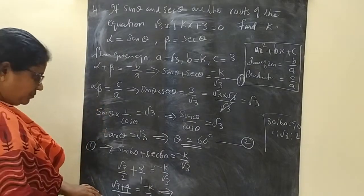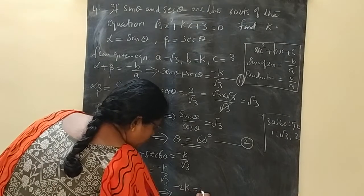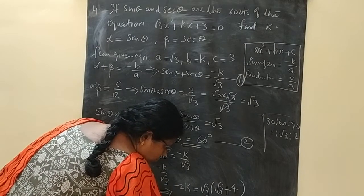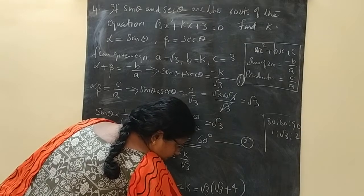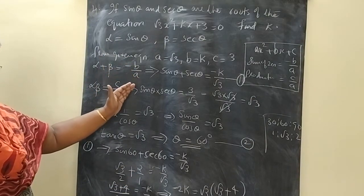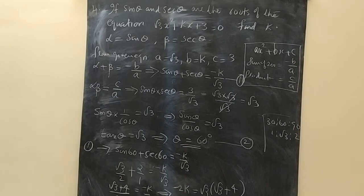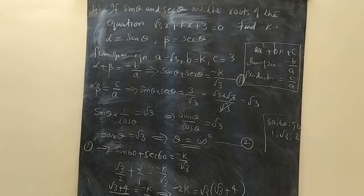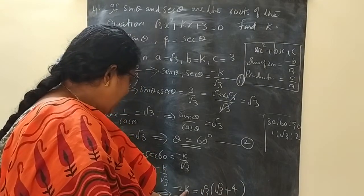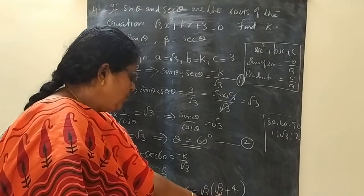Cross multiplying and simplifying with LCM 2: (√3 + 4)/2 = -k/√3. Cross multiply to get -2k = √3(√3 + 4) = 3 + 4√3. Therefore k = -(√3 + 4)×√3 / 2, which simplifies to k = -(3 + 4√3)/2.